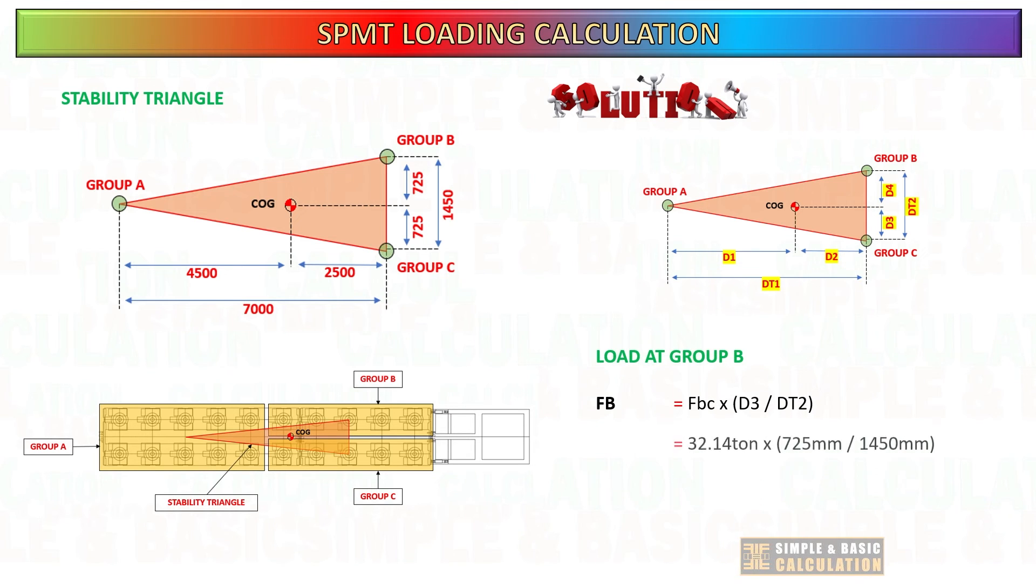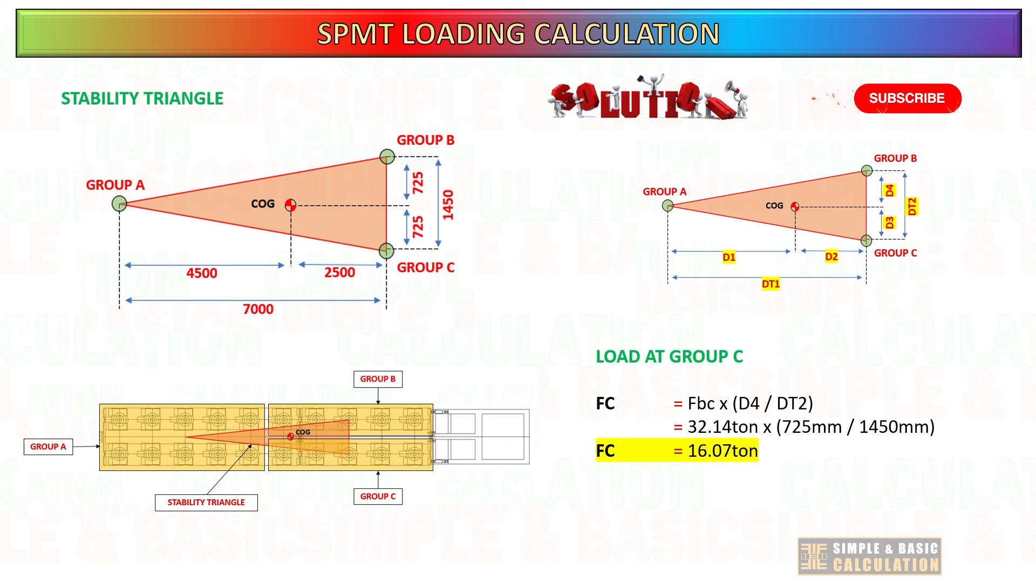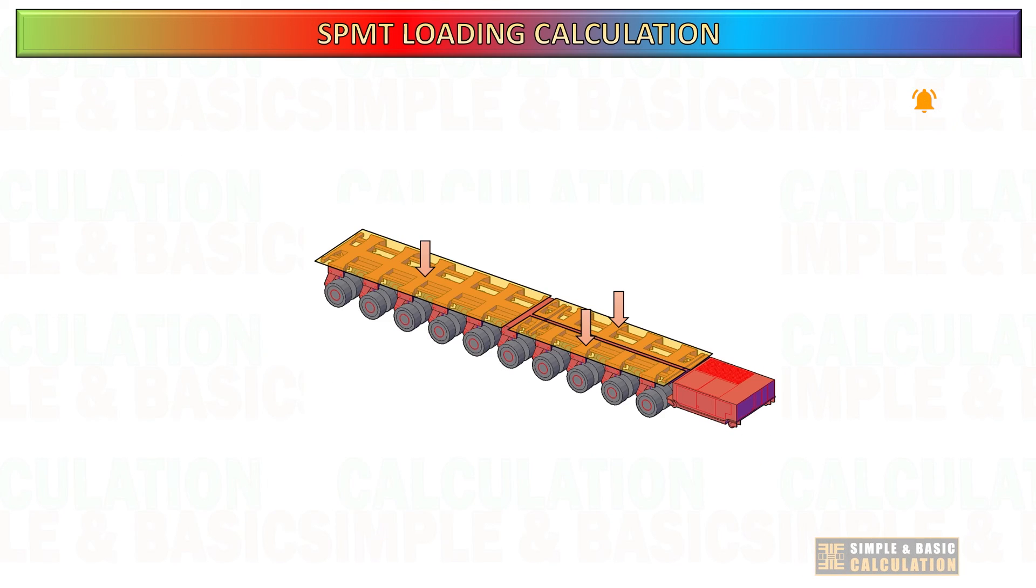Let's start to calculate the load in group B: total load at B and C multiplied by D3 over DT2. This is the same thing for group C. The loading in group B and C is the same since the center of gravity of the cargo is between the center point of this grouping. Once the center of gravity of the cargo is offset from the center, the loading in each grouping will be different.